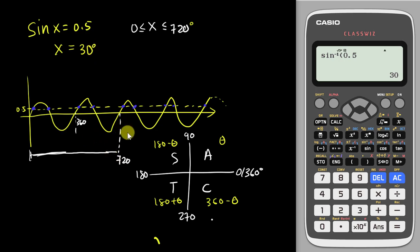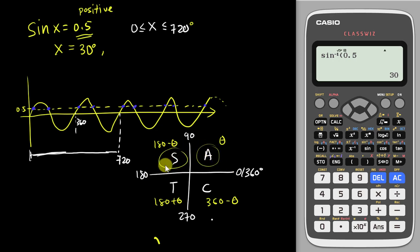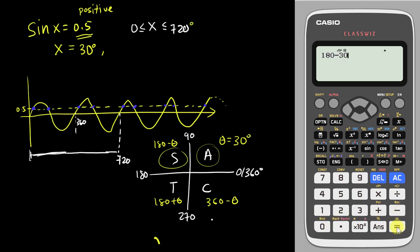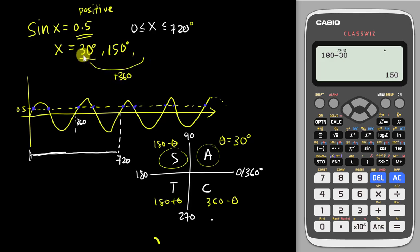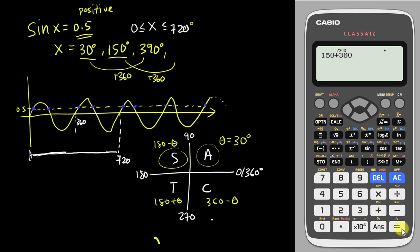You should have 4 answers, so how do you find the second one? Since 0.5 is positive, sine is positive in the first and second quadrants. Your theta is 30, which is between 0 and 90 — that's the first quadrant. For the second quadrant, you do 180 minus 30, which gives you 150.